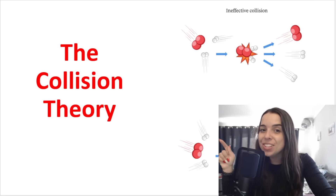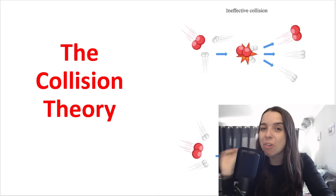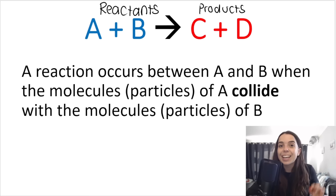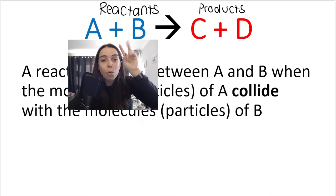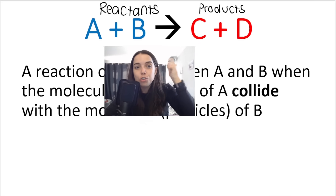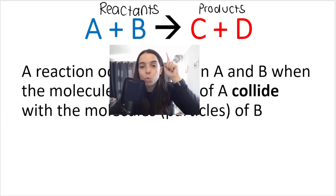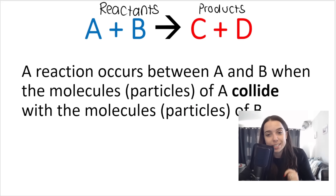Let's talk about collision theory in the context of rates of reactions. In order for a chemical reaction to take place — in order for reactants A and B to be converted into products C and D — collisions between molecules or particles need to take place.